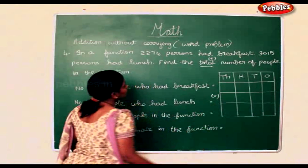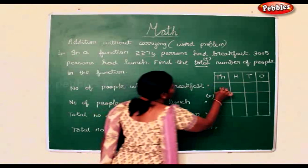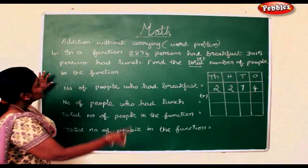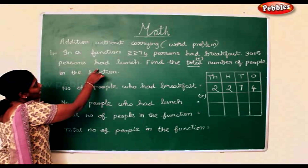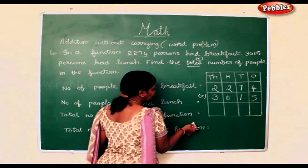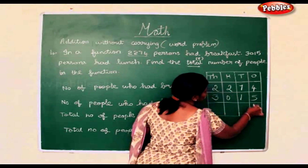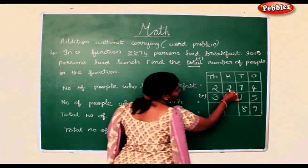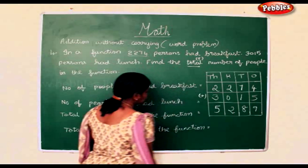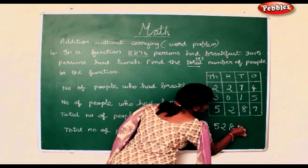The number of people who had breakfast is 2,274, and 3,015 had lunch. Now we add. 4 add 5 is 9. 7 add 1 is 8. 2 add 0 is 2. 2 add 3 is 5. The total number of people in the function is 5,289.